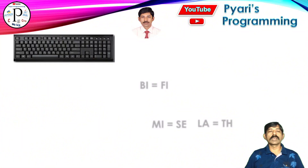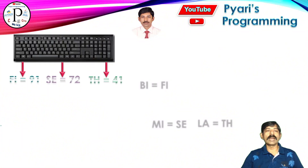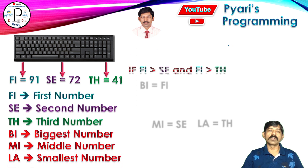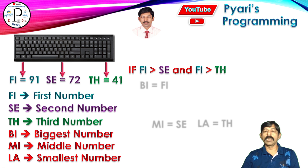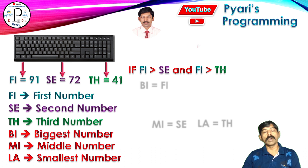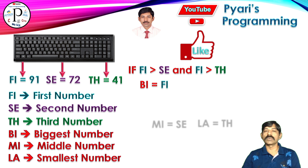Let's check it with an example. Suppose the user has entered three numbers: the first number is 91, the second number is 72, and the third number is 41. First of all, I will check if the first number is greater than the second number and the first number is greater than the third number. If the first number is bigger than both the numbers, then which one is the biggest? The first one is the biggest.